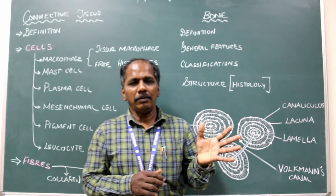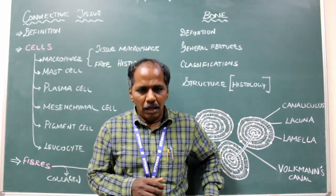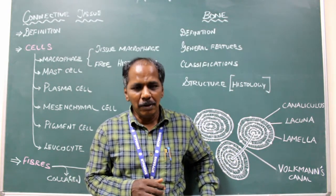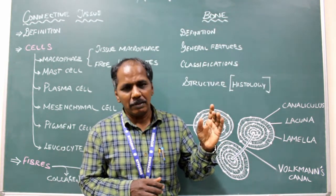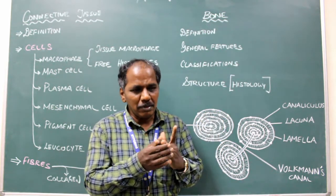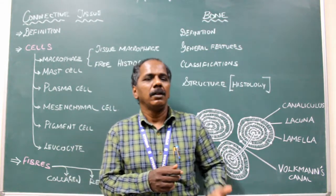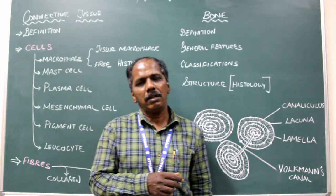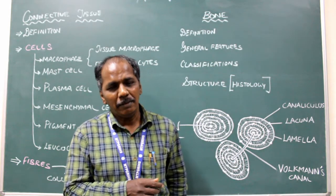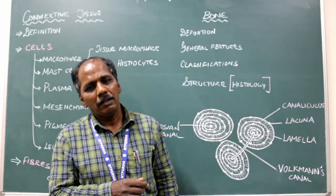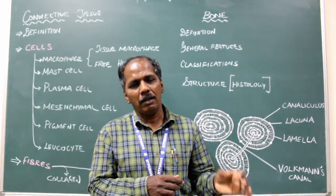The bones of the lower limb: the innominate bone or hip bone consists of three parts — ilium, ischium, and pubis. These three bones join together to form a single piece, that is the innominate bone. Femur — that is the thigh bone — is the longest bone in the body. And the leg has tibia and fibula.